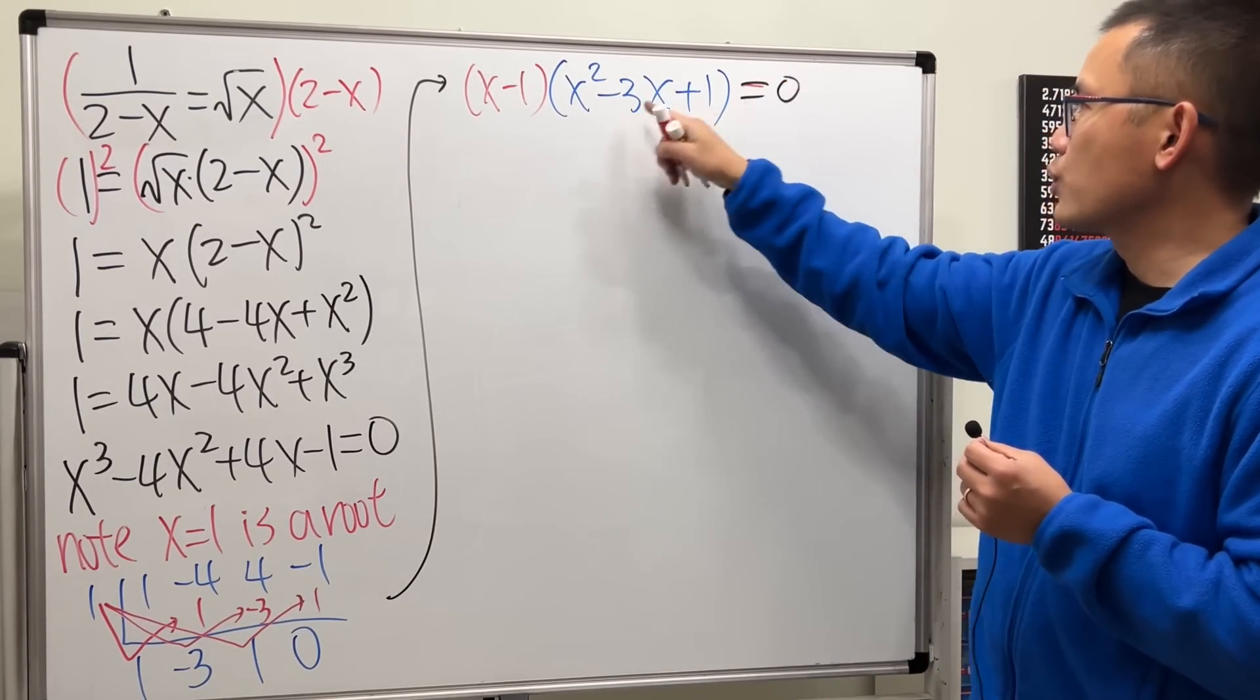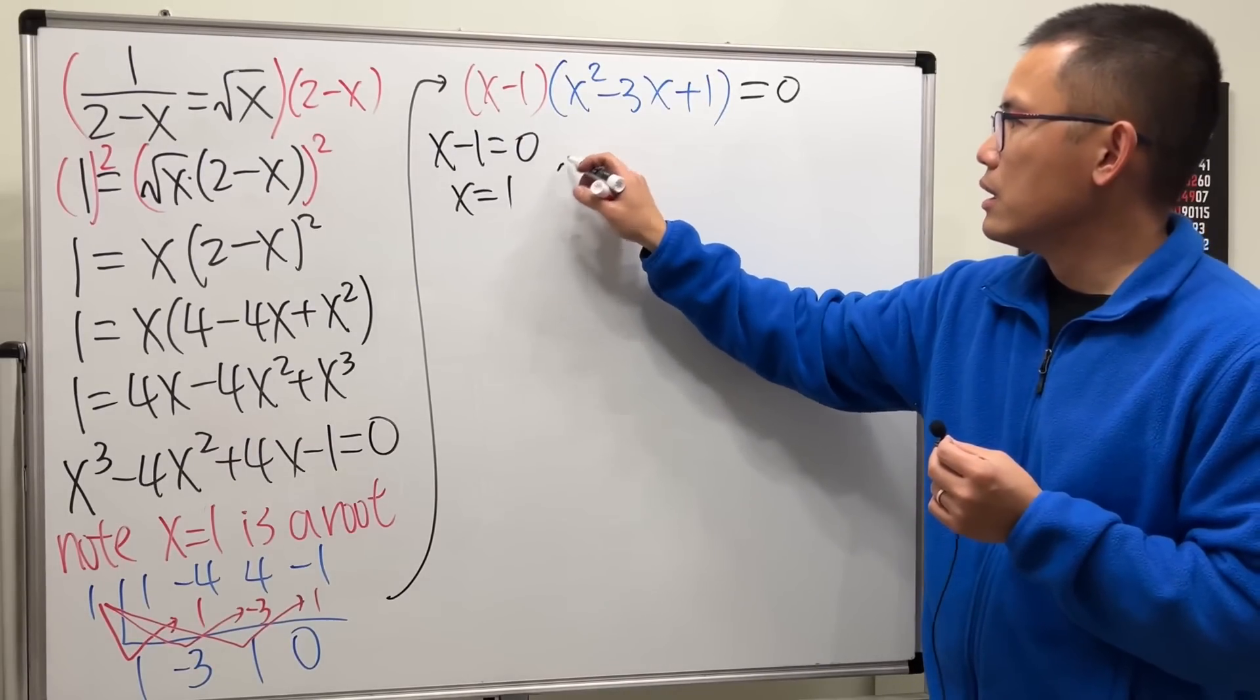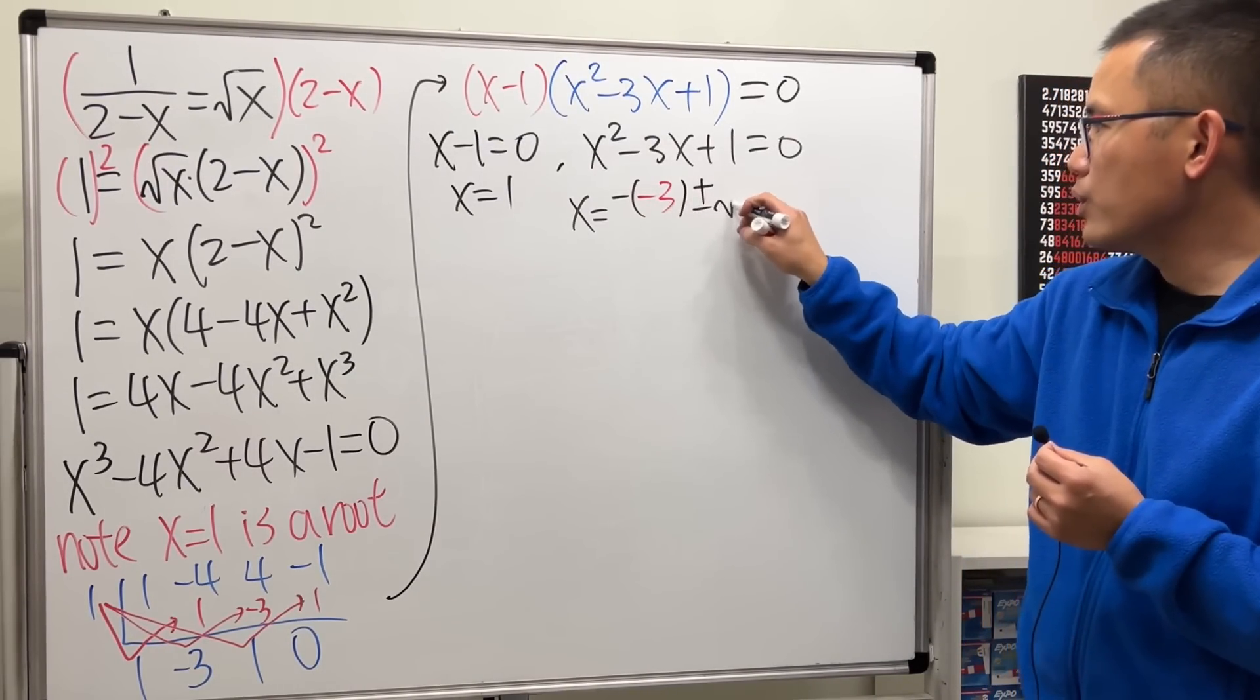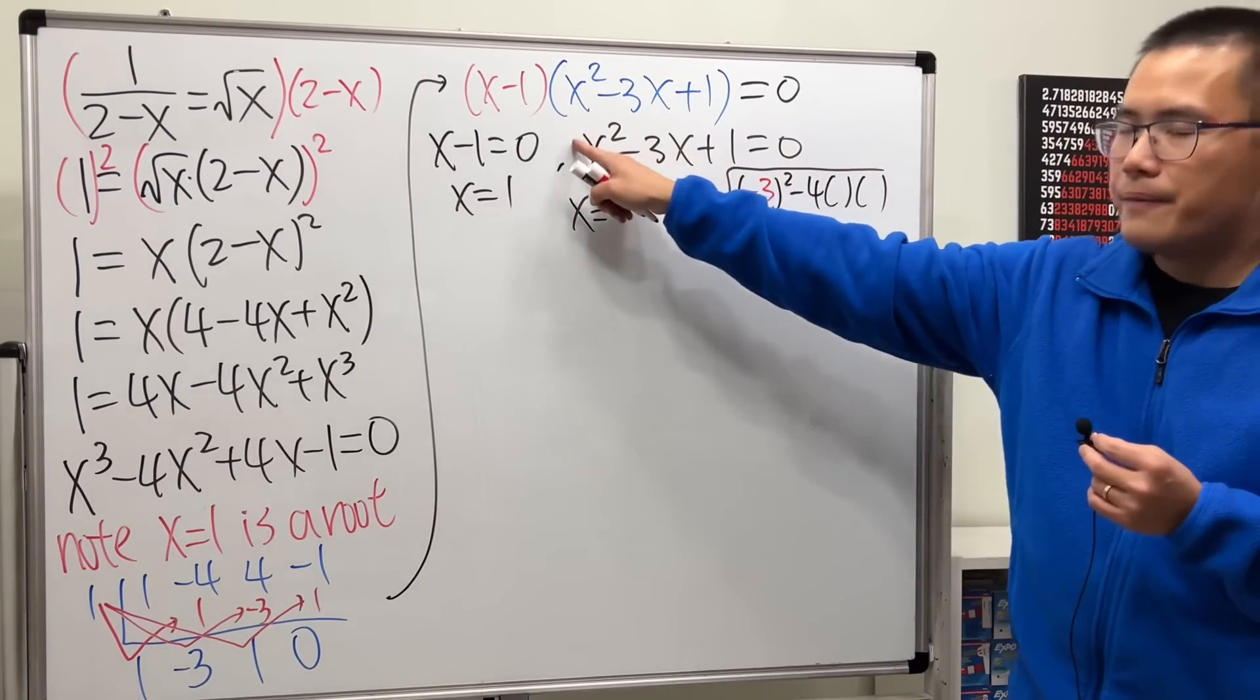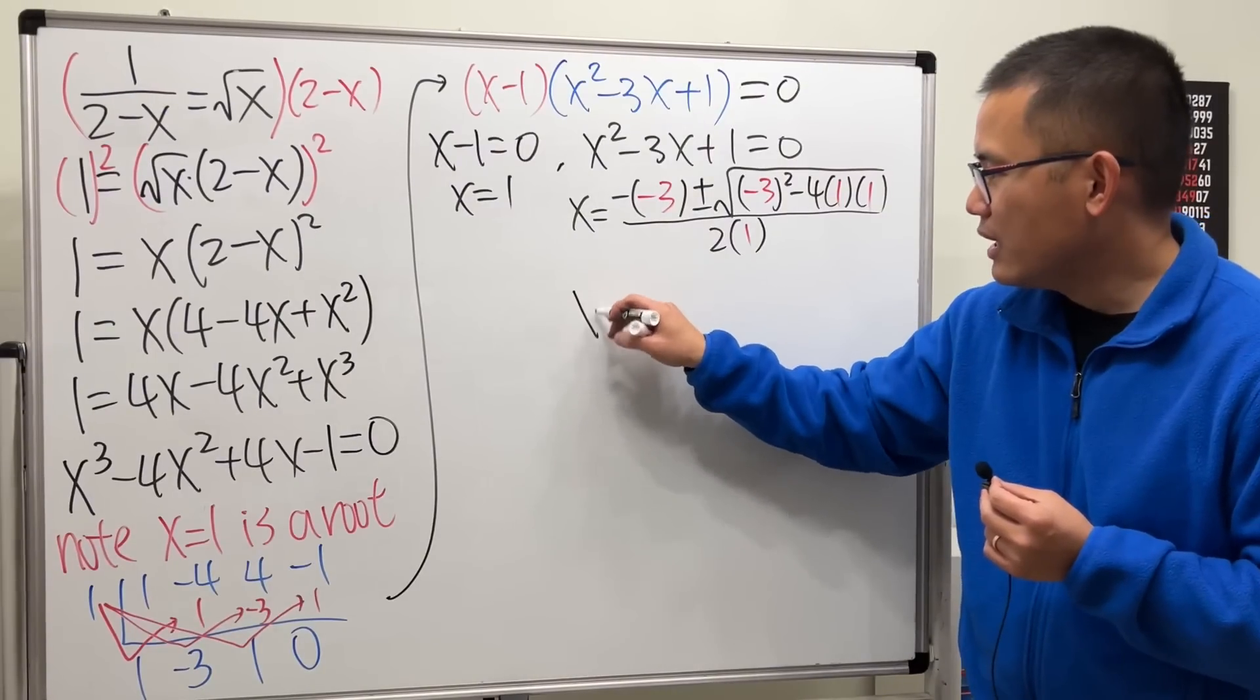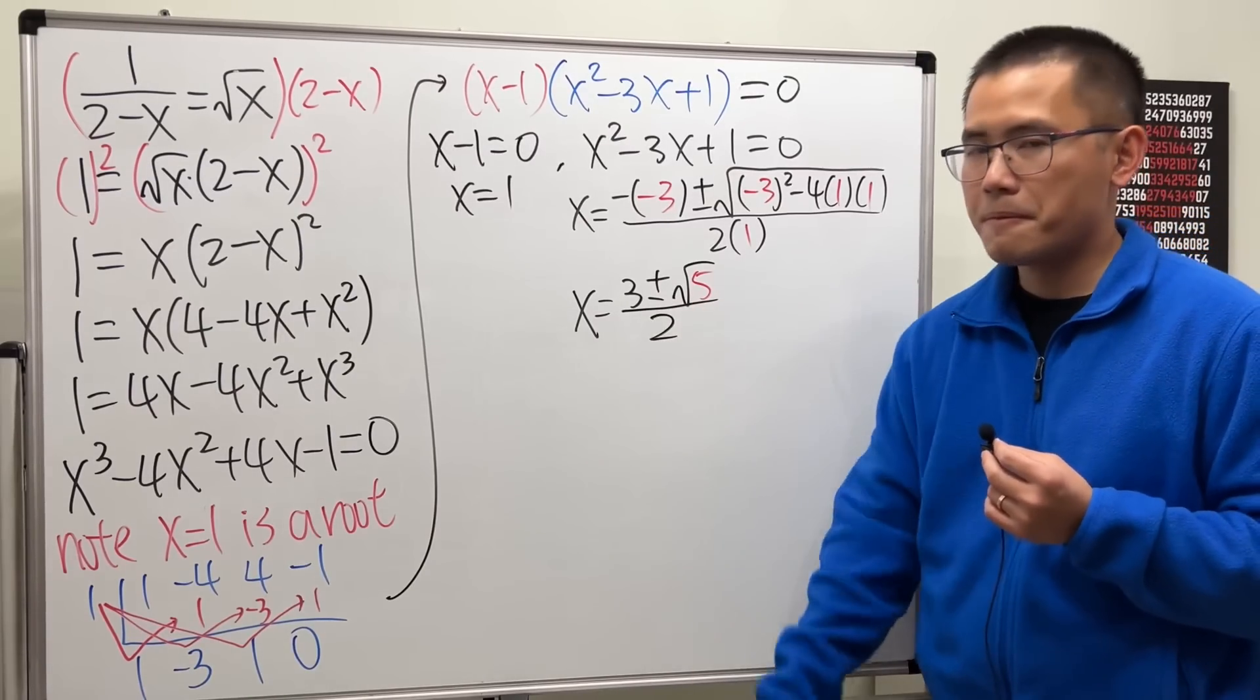Okay. Unfortunately, we cannot factor this quadratic anymore. But it's okay, because we can use the quadratic formula. From here, of course, x minus 1 equal to 0, x is equal to 1. From here, x squared minus 3x plus 1 is equal to 0. We know x will be negative b, which is negative 3. So x equals 3 plus or minus square root of b squared minus 4ac. A is 1. C is 1 over 2 times a. Just like that. Okay. So x equals 3 plus or minus. This is positive 9 minus 4. So it's 5 instead of the square root over 2.